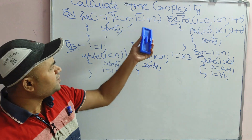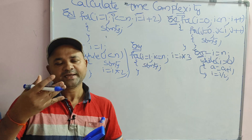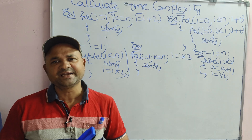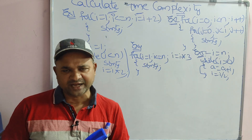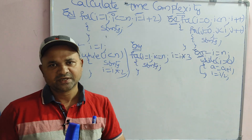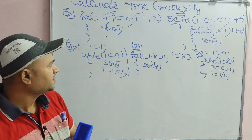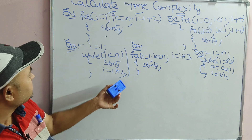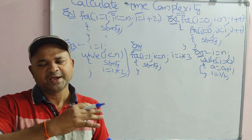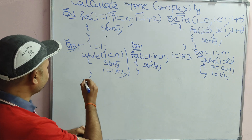Let's see how to calculate time complexity in data structures or design and analysis of algorithms. For these five examples, we are going to calculate the time complexity. Here, all these are some programs or some code snippets, a part of the program. So let's see the first example.